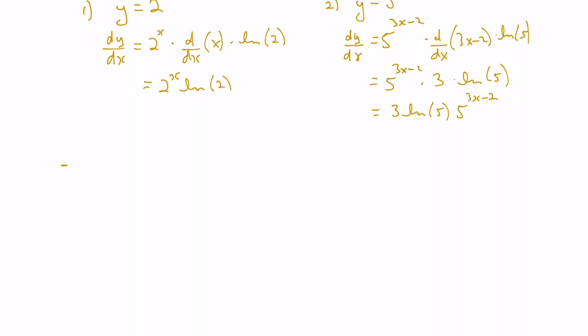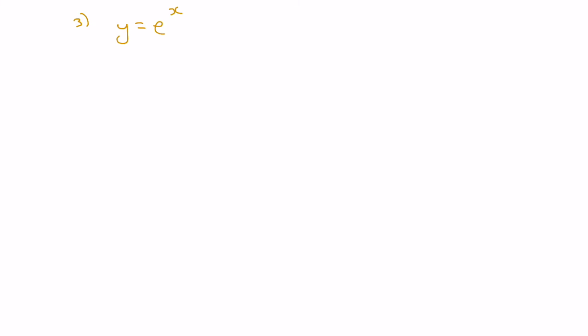Let's look at a special case. What if the base of the exponential function was e? So let's say we wanted to find the derivative of y equals e to the x, where e is Euler's number constant. Applying the formula, the derivative would be the function itself times the derivative of the exponent x times the natural logarithm of base e. The derivative of x is 1 and the natural logarithm of e is also 1, since ln and exponential are inverse functions. So the derivative of e to the x is itself, which is both very interesting and very helpful when solving calculus problems.